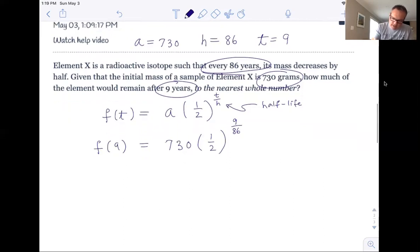And again, I'm going to put that into my graphing calculator. And this shakes out to be about 679 grams. So it didn't lose that much. Why? Because it takes 86 years to lose half of it. Only nine years have ticked off the clock. That's why you only went from 730 to 679.